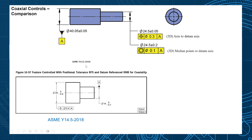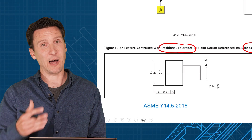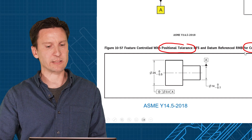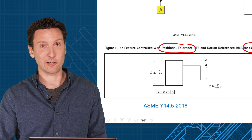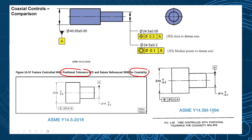Looking at examples in ASME Y14.5 2018 — figure 1057 shows position tolerance used for coaxiality. It's pretty simple: you have a smaller diameter called out as A, and you want this diameter to have a size and position within 0.4. That's good old coaxial. Some people say that's changed, but actually it was exactly like that in earlier versions. In the 1994 standard, they did the same thing — the figure was changed just a little bit, but they had position tolerance controlling coaxiality, pretty much unchanged. So you've been using coaxiality with position tolerance for decades.